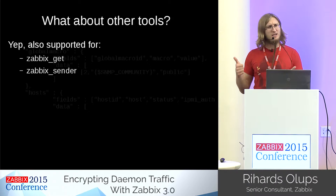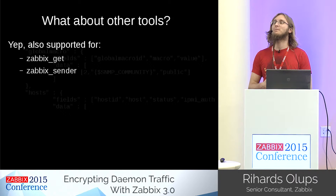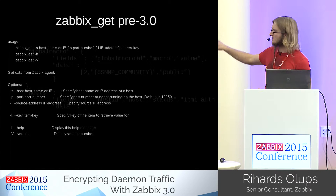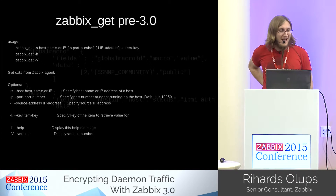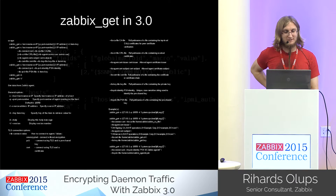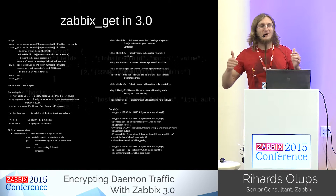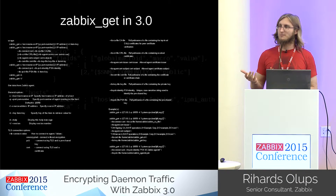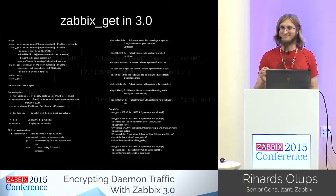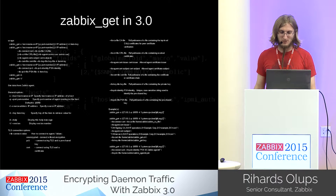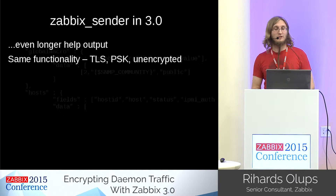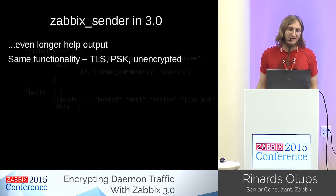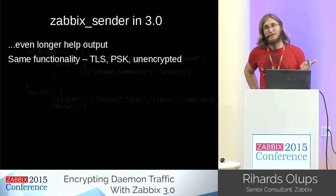Zabbix Get and Zabbix Sender are completely supported for encryption. Looking at the help output of Zabbix Get: before 3.0 it's simple, but in Zabbix 3.0 it will show all encryption options including PSK, certificates, and examples. Consult the documentation first if you run into problems. Zabbix Sender is also fully supported — the help output is even longer — with the same functionality: PSK, certificates, or unencrypted all supported.